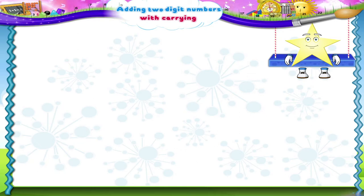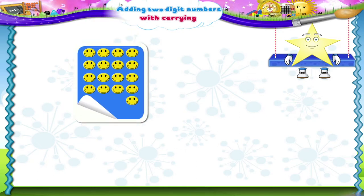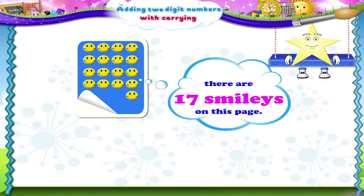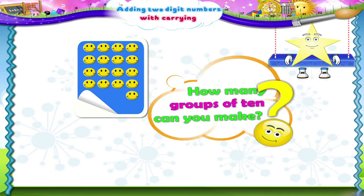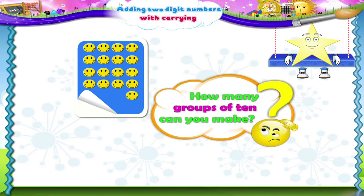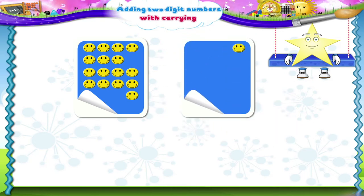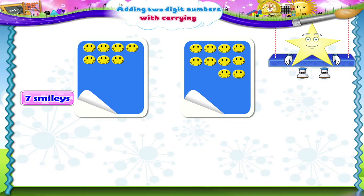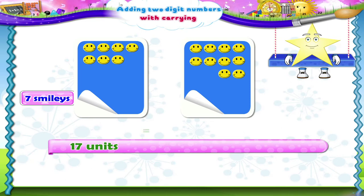The next sticker page is of smileys. Hey Starry, there are seventeen smileys on this page. How many groups of ten can you make? Yes, one group. How many smileys are left? That's right, seven. We can also write it as seventeen units equals one ten and seven units.